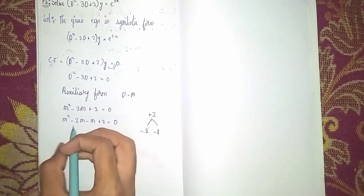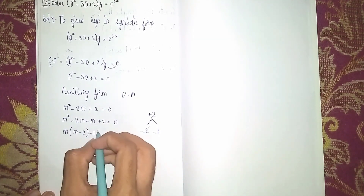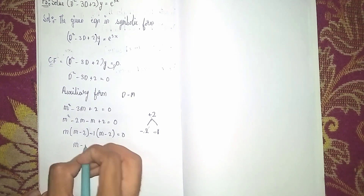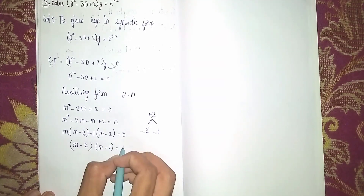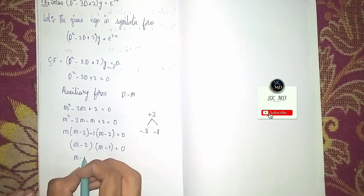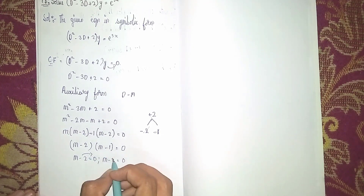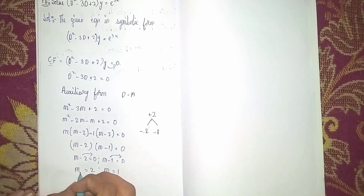Taking common: m(m - 2) - 1(m - 2) = 0, giving (m - 1)(m - 2) = 0. Equating each factor to zero separately: m - 2 = 0 gives m = 2, and m - 1 = 0 gives m = 1. So m₁ = 2 and m₂ = 1.